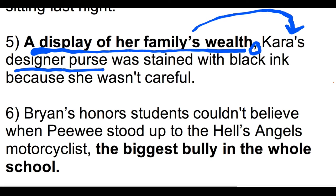Number six is the example where you use it at the end of your sentence: 'Brian's honor students couldn't believe when Pee-wee stood up to the Hells Angels motorcyclists, the biggest bully in the whole school.' The noun appositive 'the biggest bully in the whole school' comes after a comma at the very end and tells you more information about the motorcyclists. It can come in the middle, at the beginning, or at the end.